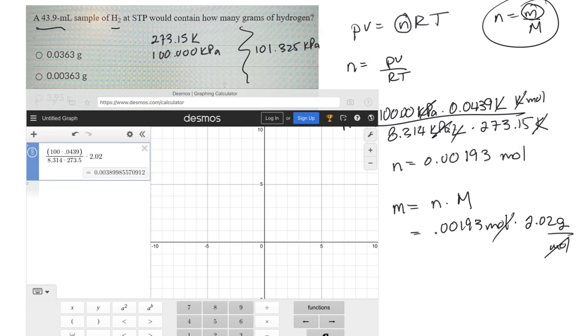And I'm coming up with 0.0038998, et cetera, grams. I have to round it to 3 sig figs. So I'd probably call it 0.00390 grams. That's probably what I'd call it.